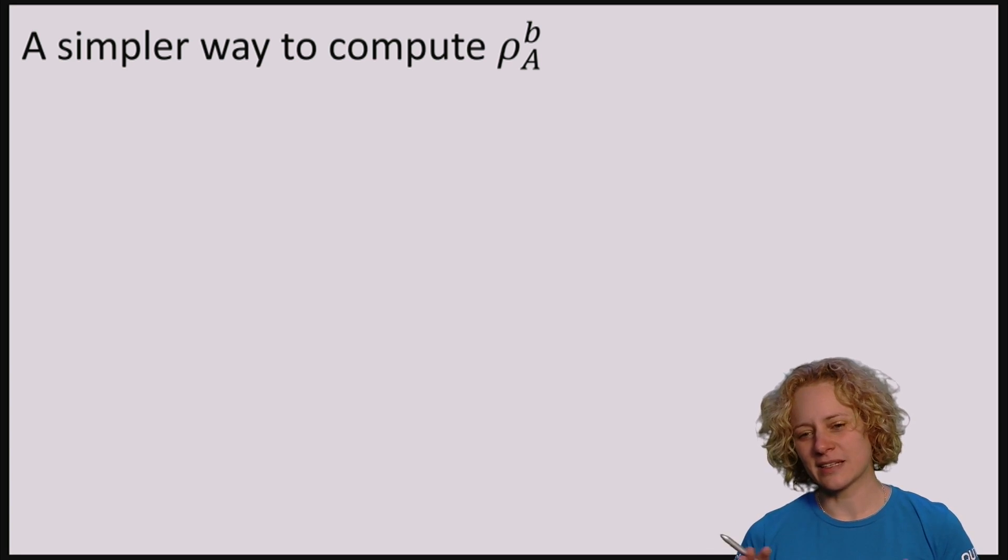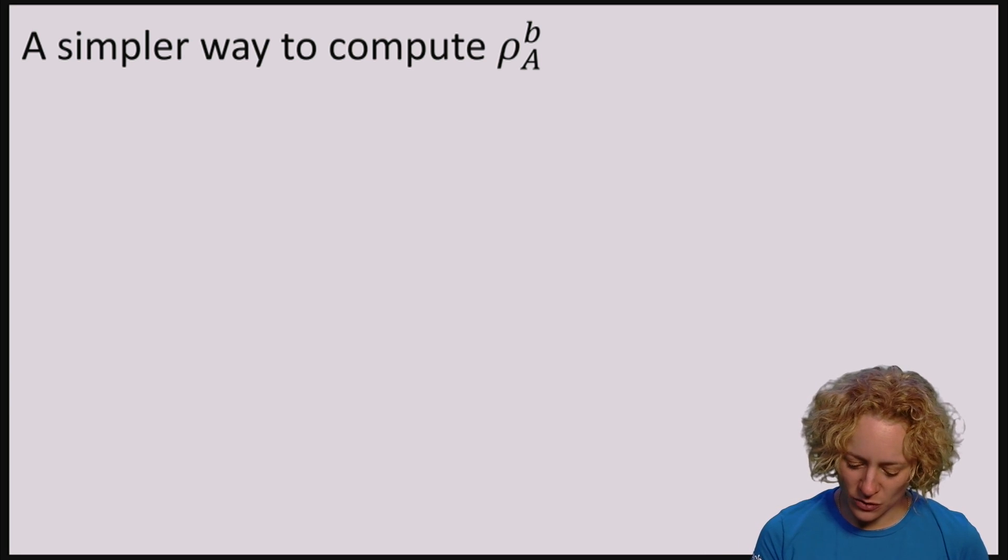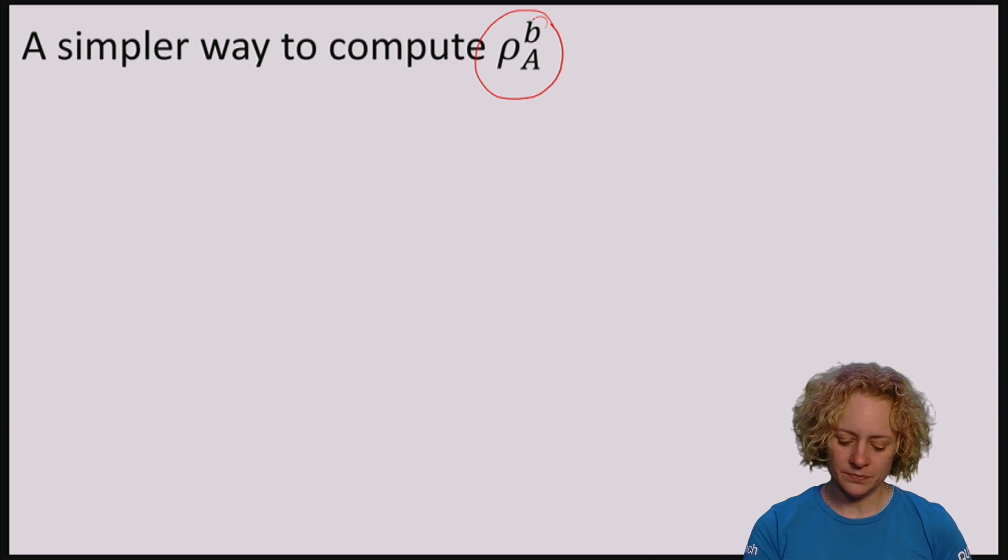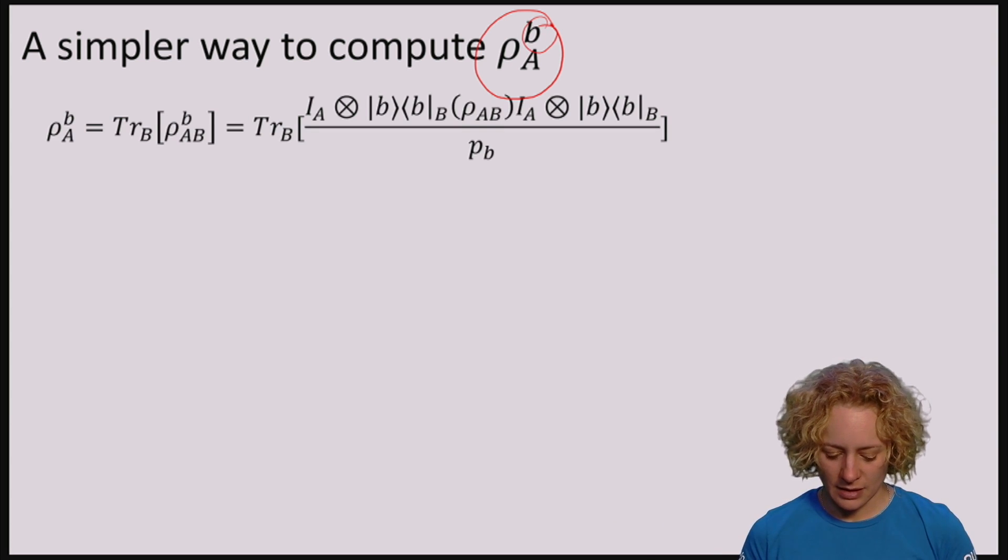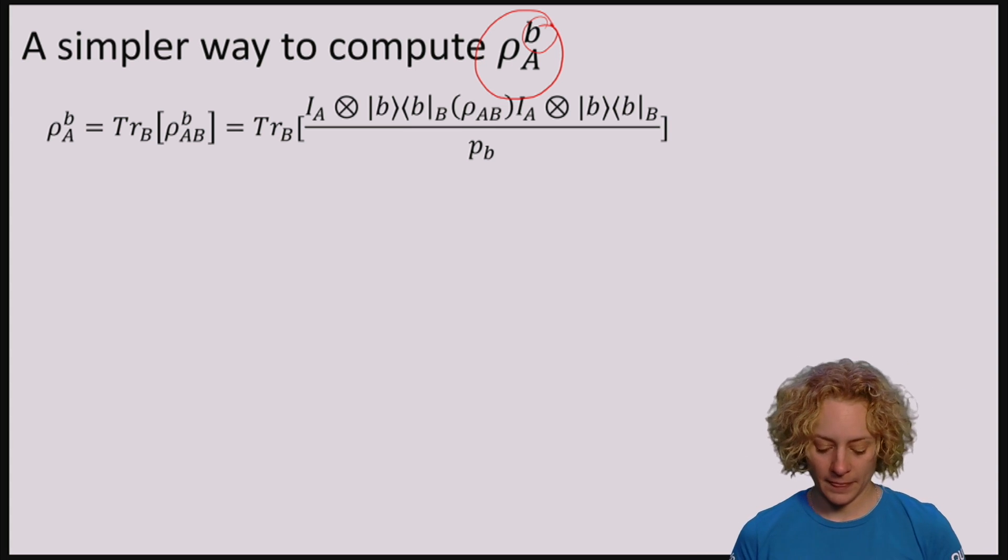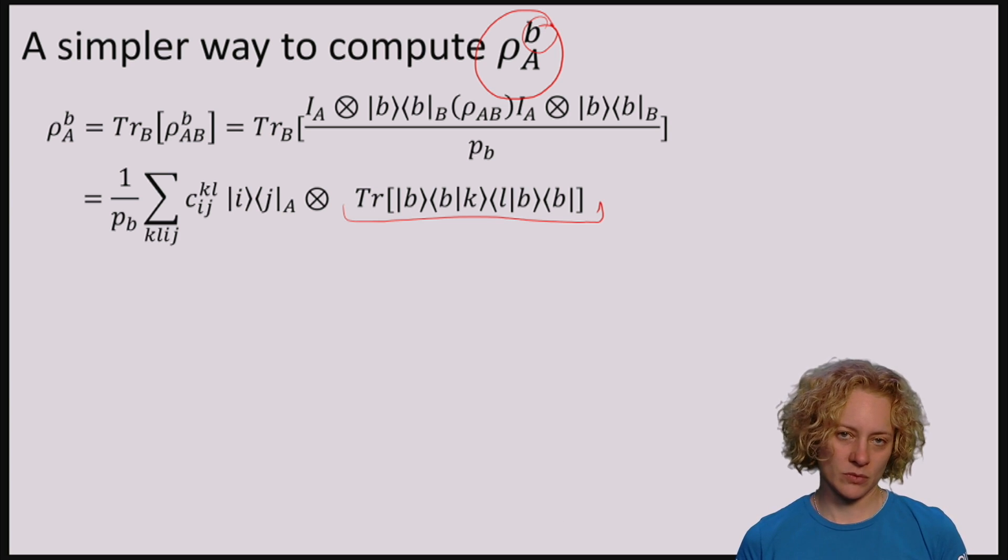In order to understand this simpler way, let me now first again look at the simpler way to compute the reduced state if we did get measurement outcome B. So let's remember that this is the state where we had computed the partial trace by again tacking on the trace on the second part. No news here, we just made that computation already.